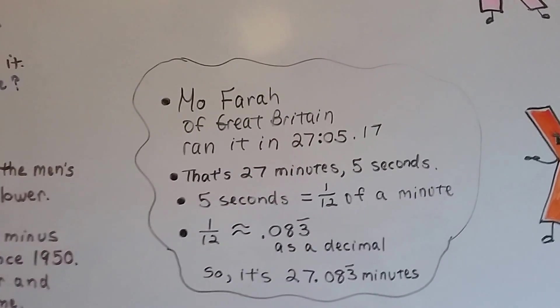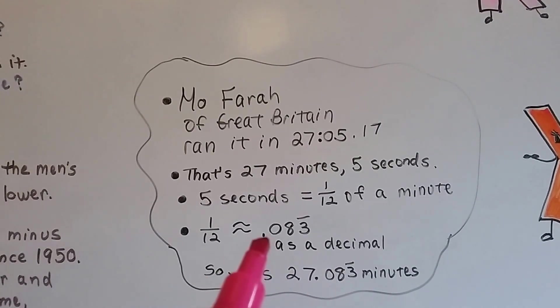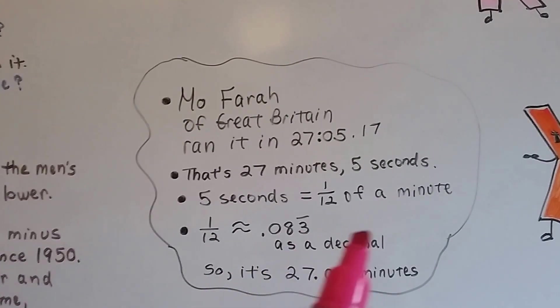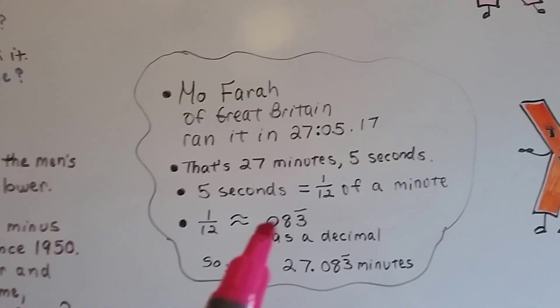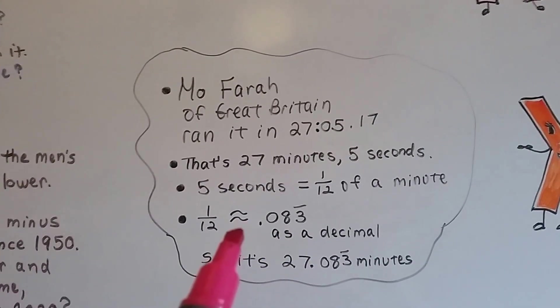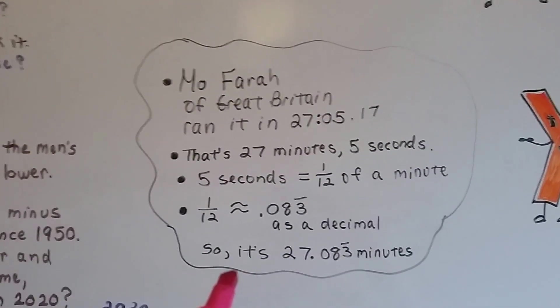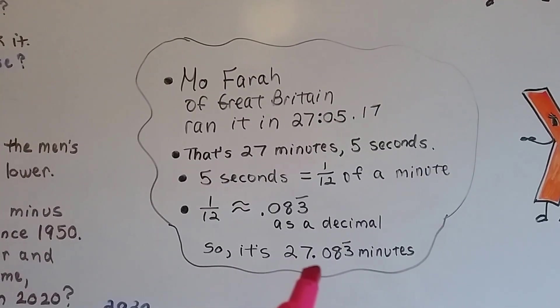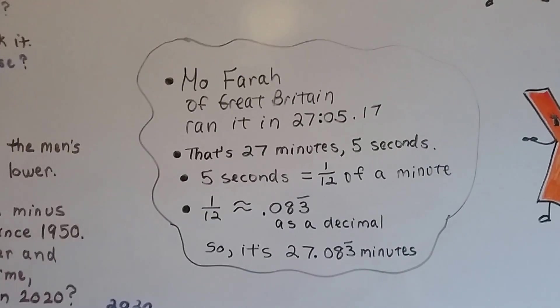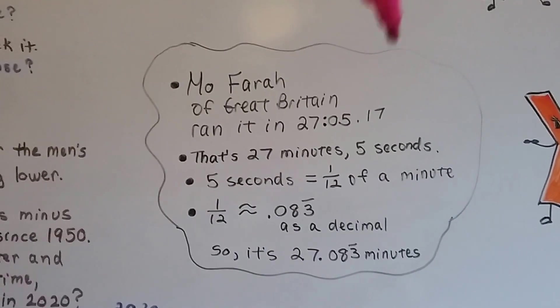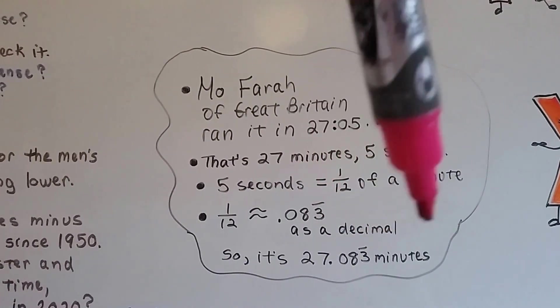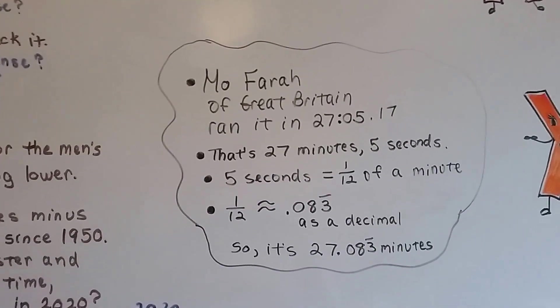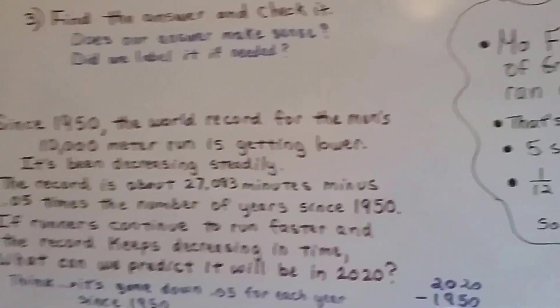So, if we wanted to write this as a decimal, 1 twelfth is approximately .0833333, so I put the bar over the 3. So, as a decimal, 1 twelfth is .083 approximately. That's why I have an approximate symbol. So, we're going to use 27.083 minutes. So, it changed from this .05.17 to .083 because we're writing it as a decimal, not as a time.